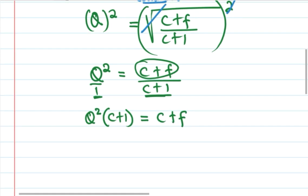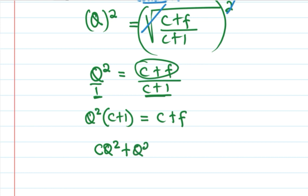Let's remove the bracket: Q squared times C gives us C times Q squared, then plus 1 times Q squared gives us Q squared, and that is equal to C plus CF.